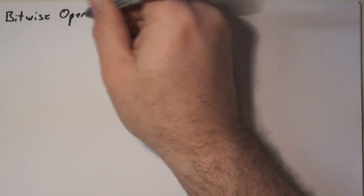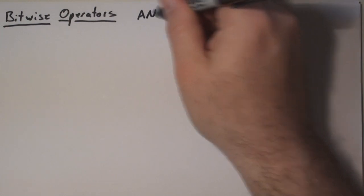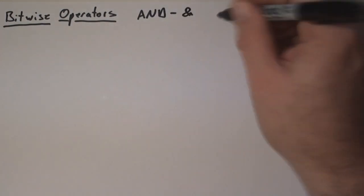In this video, we're going to talk about bitwise operators. Bitwise operators allow you to do a logical operation per bit on a variable or a literal value. There are four bitwise operators in the C programming language.